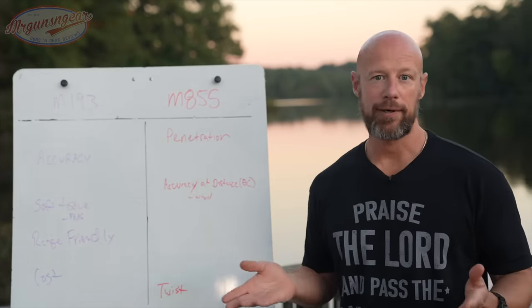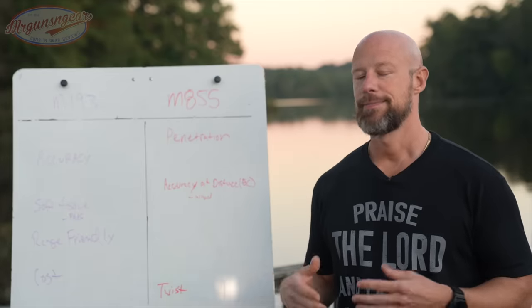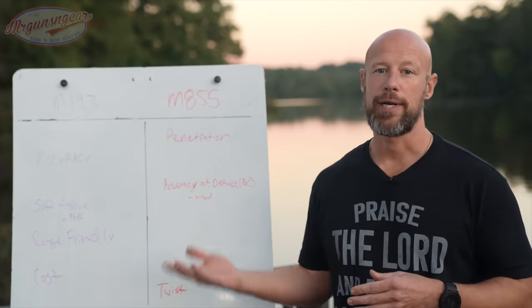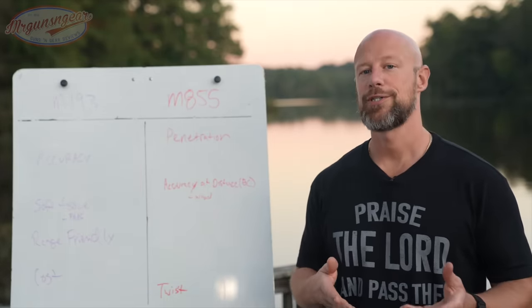Accuracy: both of these rounds are actually plenty accurate if loaded correctly and consistently — you can expect 2 to 3 MOA depending on the gun. I use M193 as a baseline in a lot of accuracy testing here on the channel, and there are videos demonstrating it can get really close to MOA accuracy within 100 yards. However, at distance, M855 tends to do better for a couple of reasons: it has a better ballistic coefficient and it's heavier, so wind doesn't throw it around as much. Beyond about 500 yards you absolutely see those differences show up quickly.